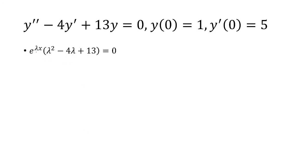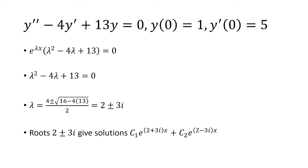e^(λx) is always greater than 0, so we know that this will never equal 0. So we just have to focus on λ² - 4λ + 13 = 0. For that we're going to use the quadratic formula and get that λ = 2 ± 3i. And so the roots are 2 ± 3i, which gives us solutions.